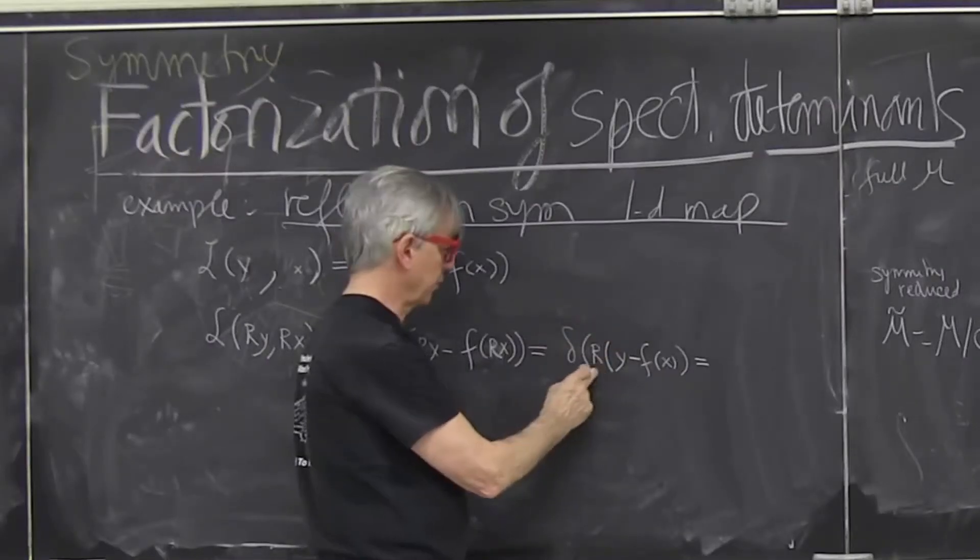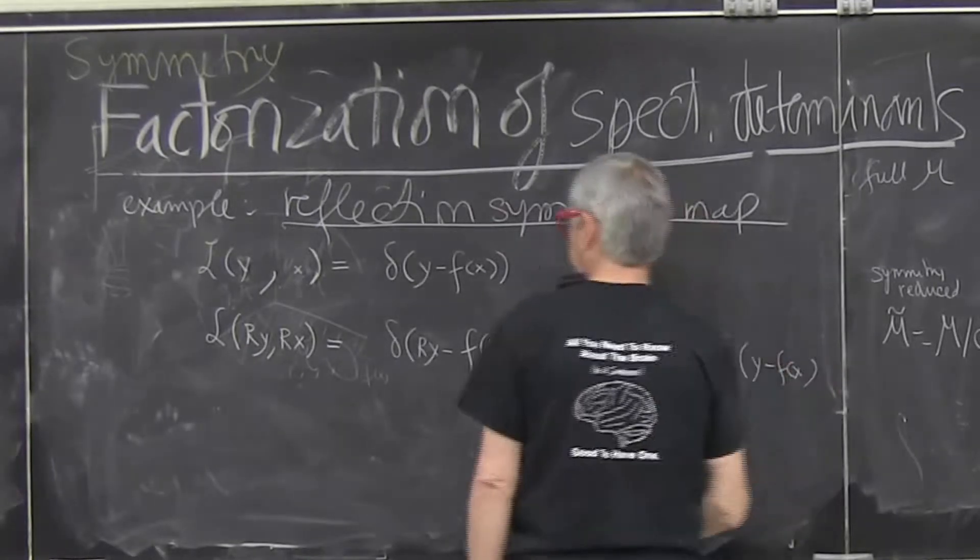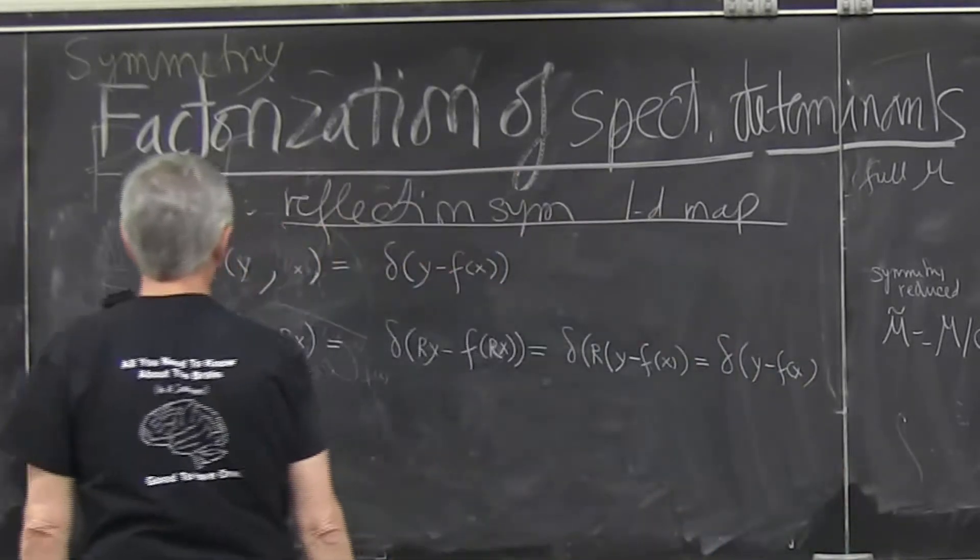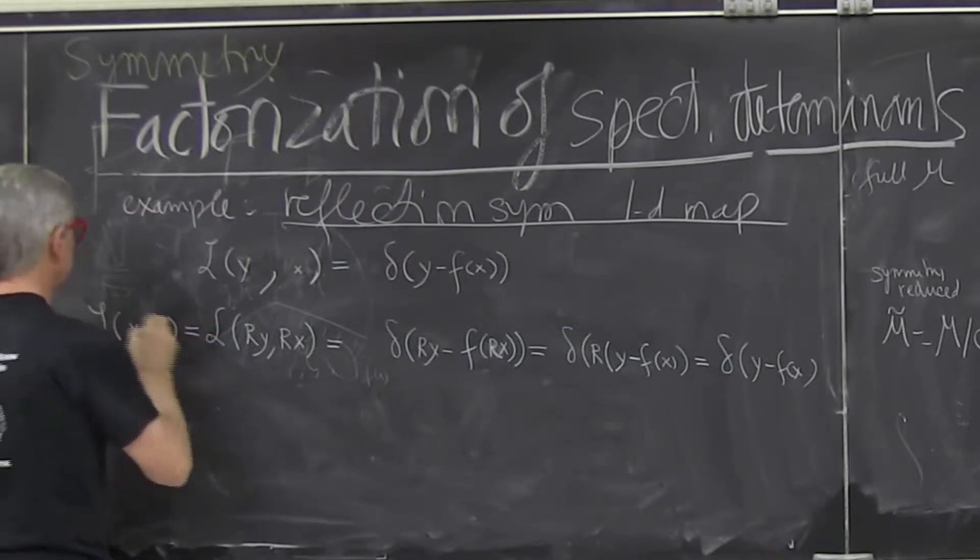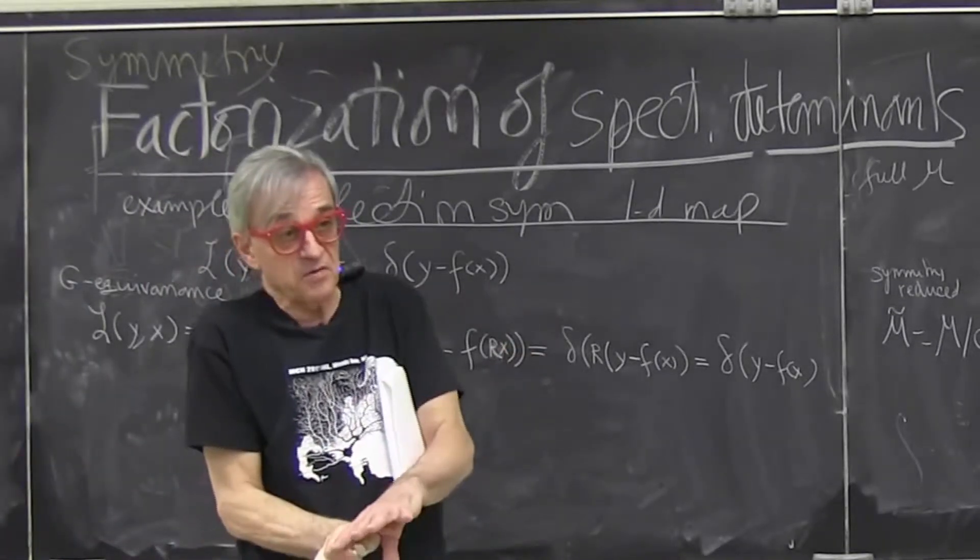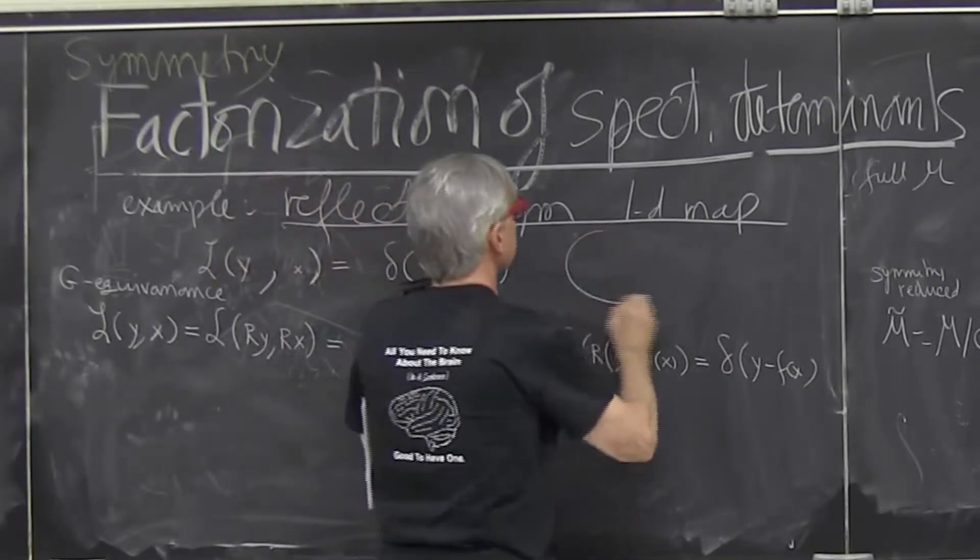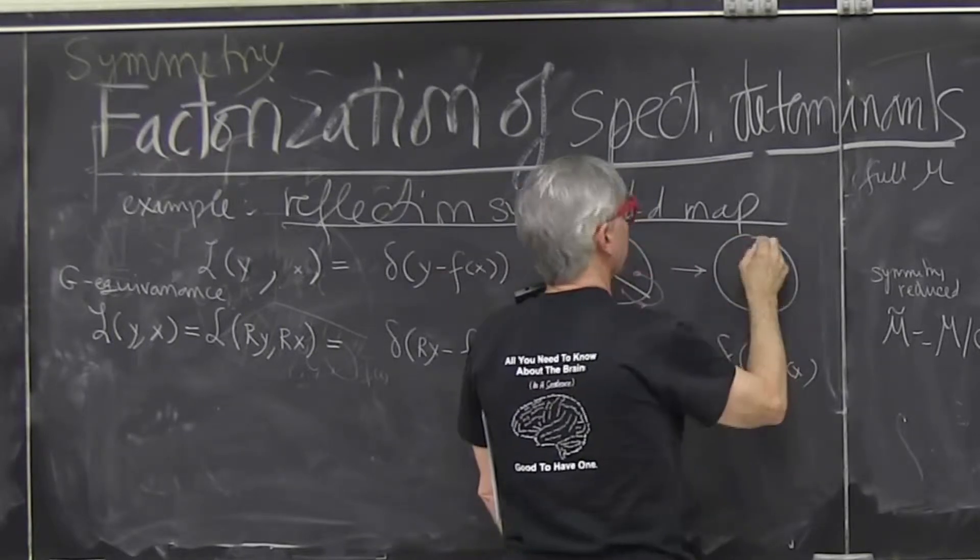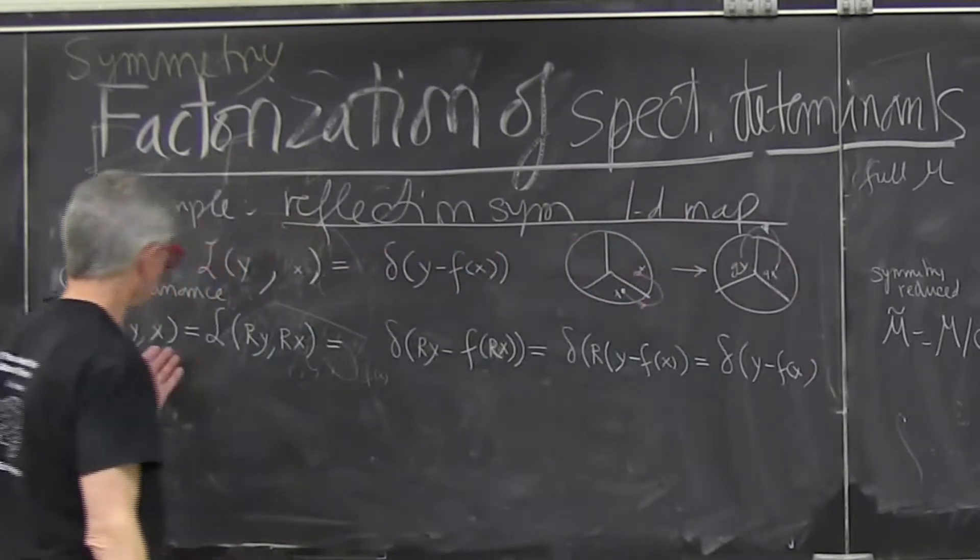So if you start computing Jacobian, Jacobian of reflection will be one absolute value. Equivariance acting on evolution operator just says that evolution operator doesn't change its form if I rotate both initial and final point. If you look at a pizza, it's very obvious. If I take a different piece of pizza, I take a trajectory, I hopped from here to there, or if I hopped from gx to y, I'll get the same result.